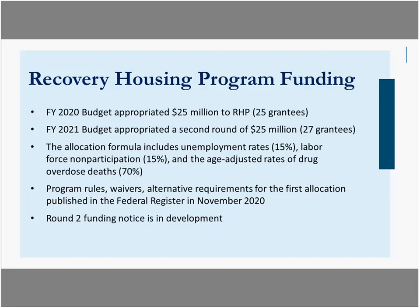There have been two appropriations of Recovery Housing Program dollars. The first was in 2020 — $25 million with 25 eligible grantees. The 2021 budget appropriated a second round of $25 million with 27 eligible grantees. A few were added and one fell off because the data the formula is based on changed, updating eligibility from 2016 to 2018. The allocation formula includes unemployment, labor non-participation, and age-adjusted rates of drug overdose deaths. Program rules and waivers were published in the Federal Register in November, and the round two notice is in development.